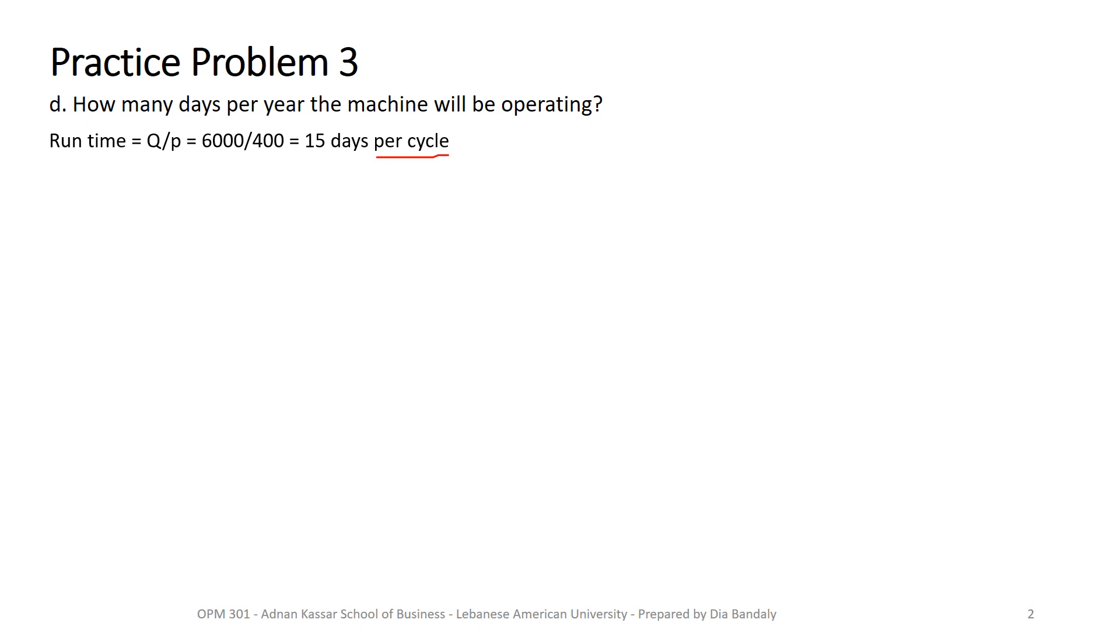But the question is, I need to know how many days you are running the machine for the whole year. So what do you think? In every cycle, we run the machine 15 days. During the whole year, how many days we run the machine? So what we need to know is we need to know how many cycles we have, and we multiply it by 15. And this will be the answer. So how many cycles do we have? We found it from the previous question, how many batches. So that 15 we found it before. So we multiply 15 days per cycle times the number of cycles, and that's 225 days per year.